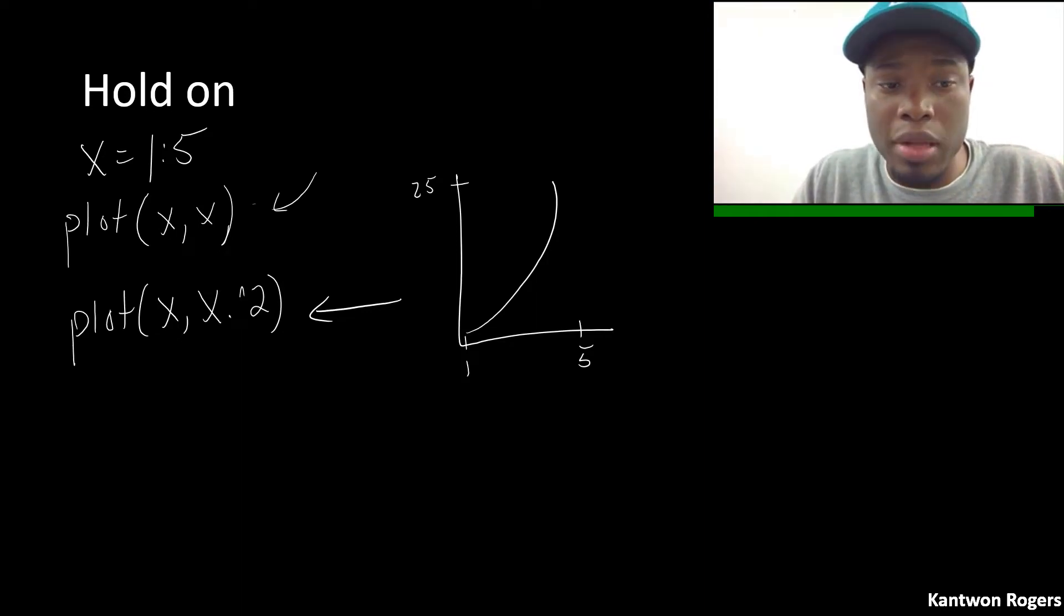Let's say I wanted both plots on my figure. In order to do that I have to use this concept called hold on. So hold on just tells MATLAB that hey keep that figure, keep everything on that figure the way it is and just each time I plot afterwards go ahead and just add it to that figure itself.